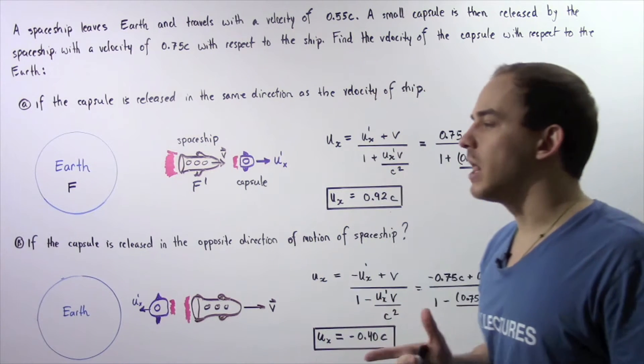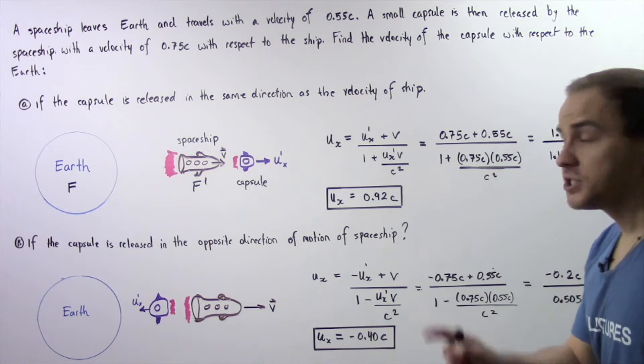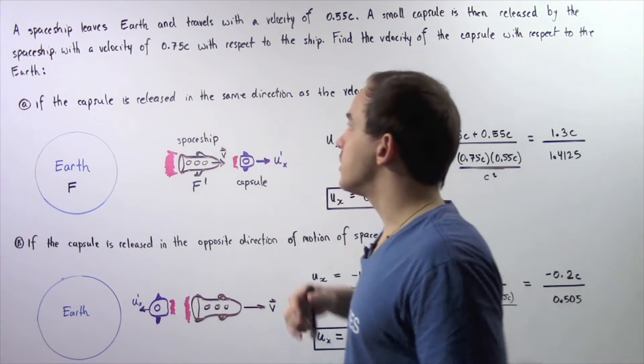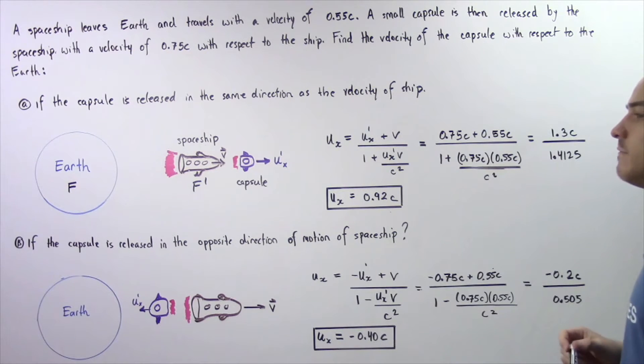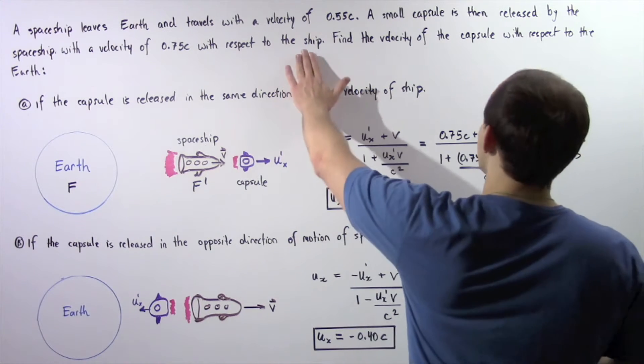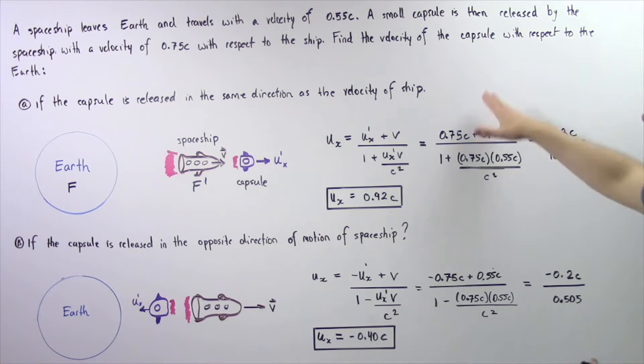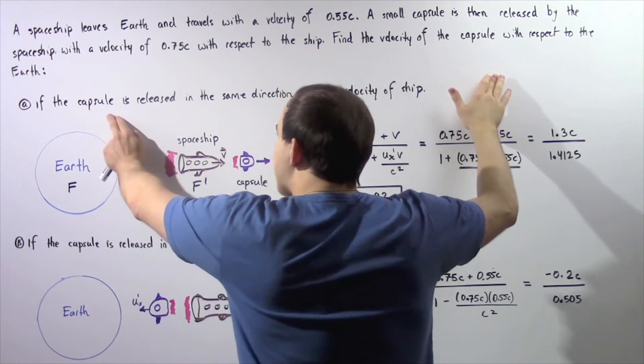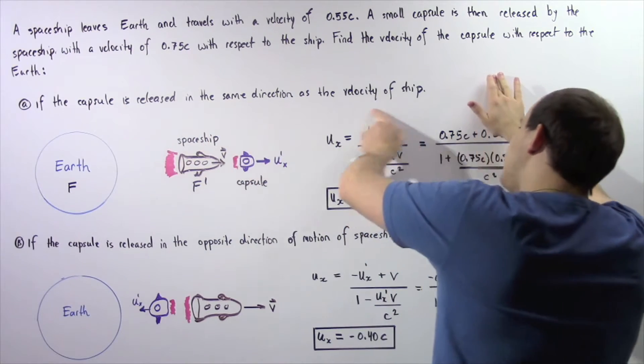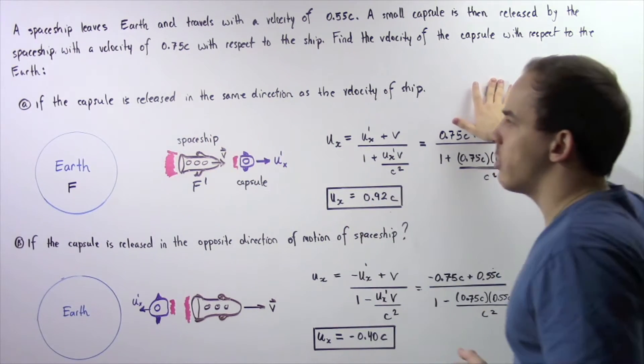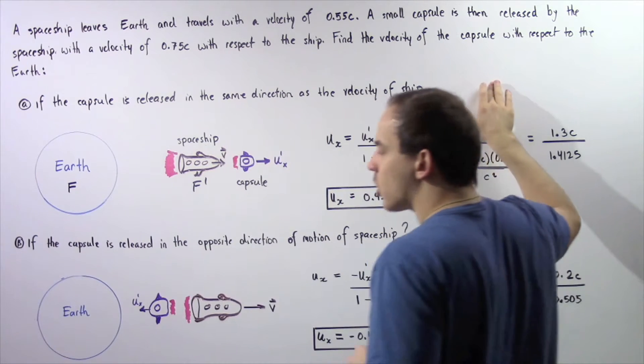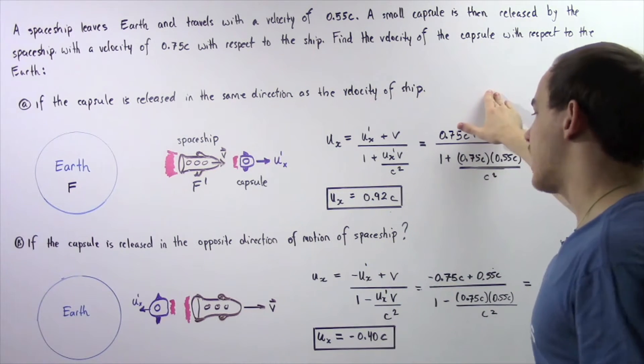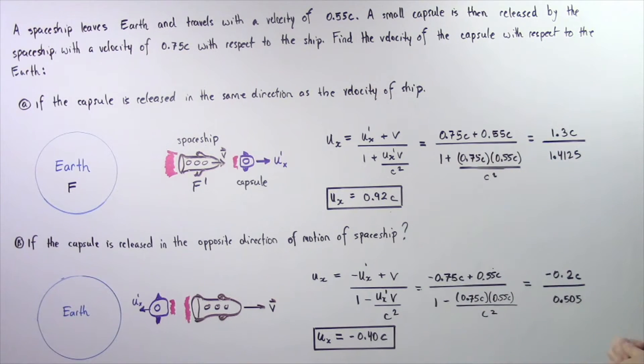where C is the speed of light in a vacuum. A small capsule is then released by that spaceship that travels with the velocity of 0.75C with respect to that spaceship. We want to find the velocity of the capsule with respect to the Earth if the capsule is released in the same direction as the velocity of the spaceship in part A, and in part B, if the capsule is released in the opposite direction of motion of that spaceship.